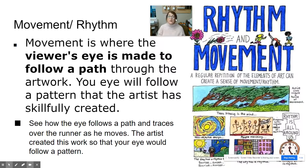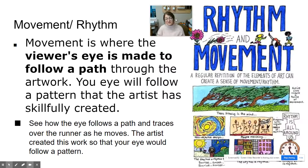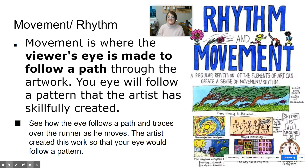Movement and rhythm are more principles that go hand in hand. Movement is where the viewer's eye is made to follow a path through the artwork — your eye follows a pattern the artist has skillfully created, so you can tell viewers where you'd like them to look first. A regular repetition of elements of art can create a sense of movement and rhythm.